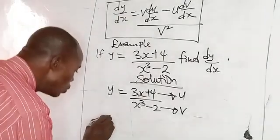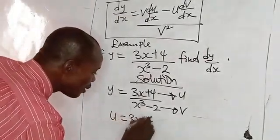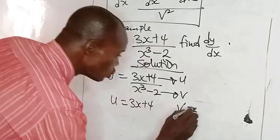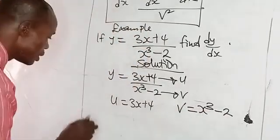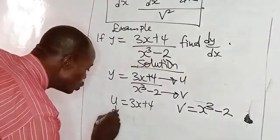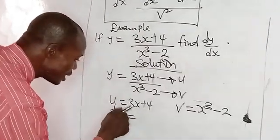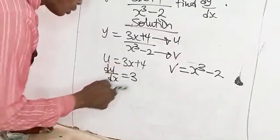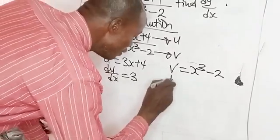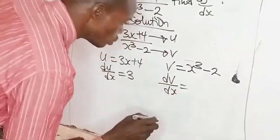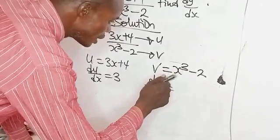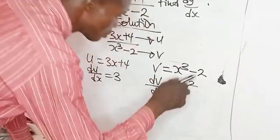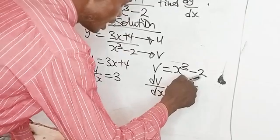That means u equals 3x + 4 and v equals x³ − 2. Now, du/dx: differentiating 3x gives 3, and 4 is a constant whose derivative is 0, so du/dx equals 3. For dv/dx: differentiating x³ gives 3x², and the constant −2 has derivative 0, so dv/dx equals 3x².